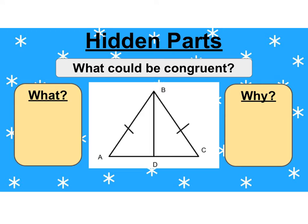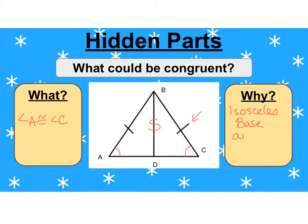Let's look at this one. We do know that BD is congruent to BD, and we can draw a squiggly there to show those sides are congruent. But that's not what we're looking for in this picture — there's something else that's hidden. I notice congruent marks on the legs, so this must be an isosceles triangle. If it's an isosceles triangle, the legs are congruent, and therefore the base angles must be congruent. So I can say angle A is congruent to angle C. The reason is the isosceles base angle theorem.